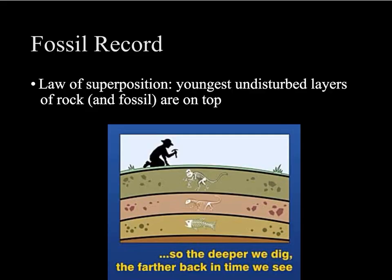One thing that's important to keep in mind when thinking about the fossil record is the law of superposition — the idea that the youngest, undisturbed layers of rock are going to be on top, and the further down you go, it's kind of like you're going back in time. Of course, with tectonic plate movement, that shifts things around too, but this is when carbon dating can come in really handy to figure out how old something is.